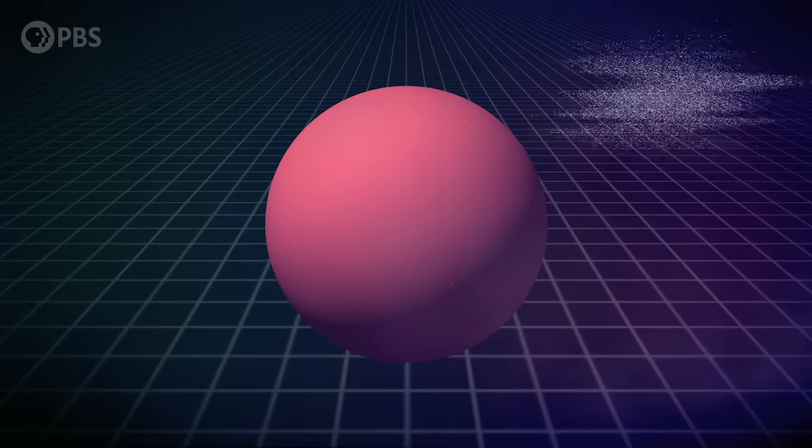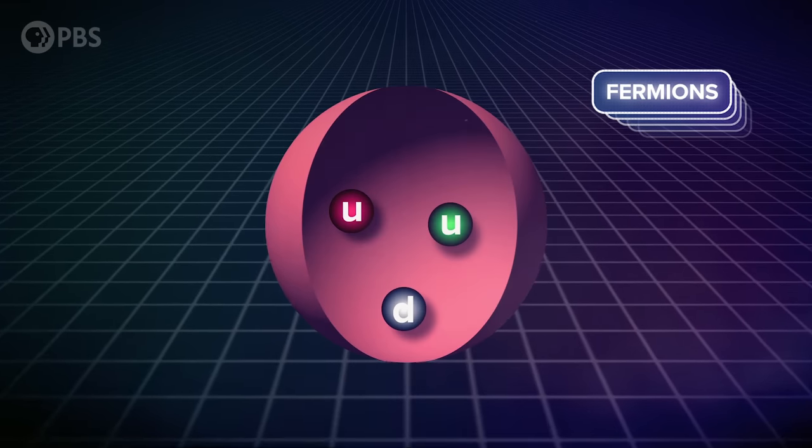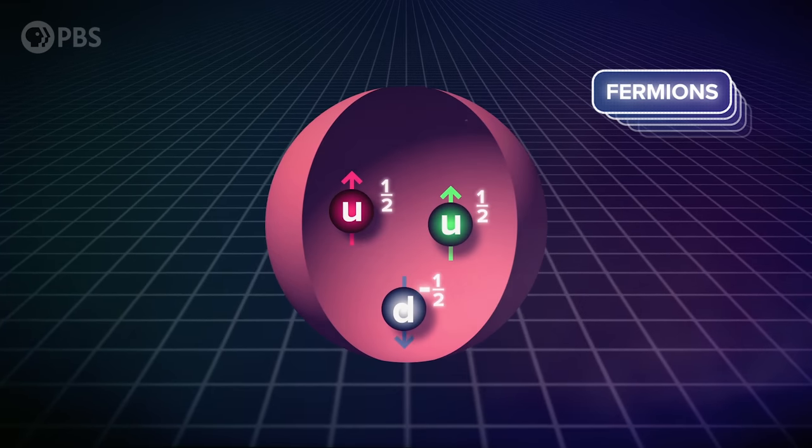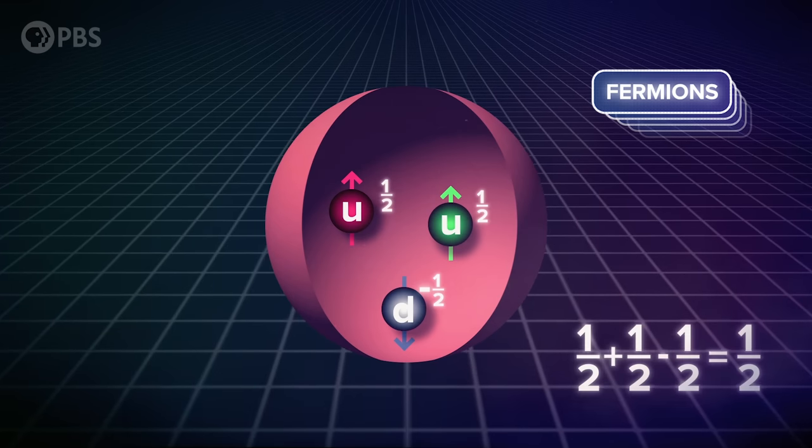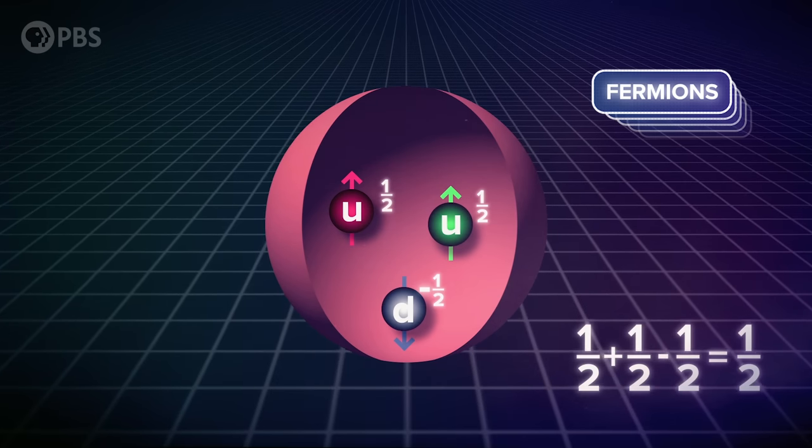Fermion wavefunctions have half-integer spin. Multiple fermion wavefunctions that are somehow connected to each other have spins equal to the sum of those spins. So for example, a proton is made of three quarks, two with spin of 1/2 and one of -1/2. Adding those up, you get a proton that also has a spin of 1/2,